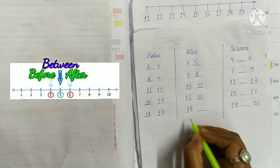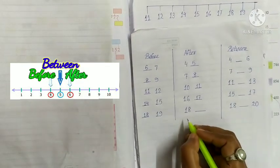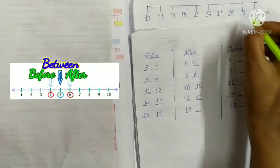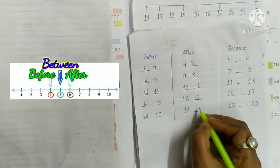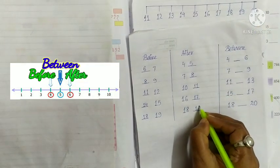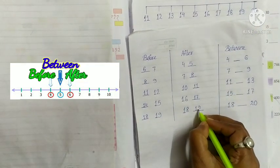Next, 18. What comes after 18? 19. Write 19.